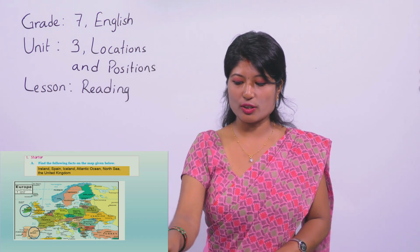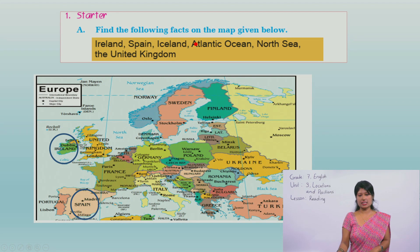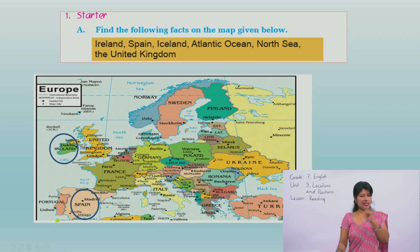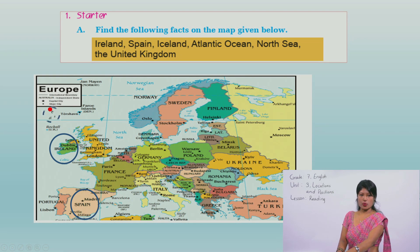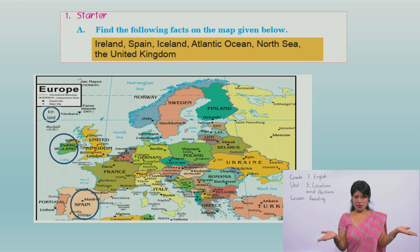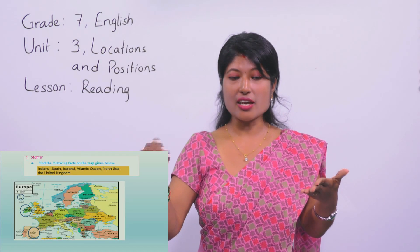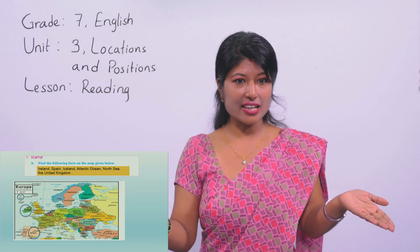Now the next fact we have to find is Iceland. Can you see Iceland in this map? There is a little bit of a twist. We don't see it labeled here - it is not mentioned. But somehow the point of Iceland is somewhere here. So somewhere here we can find Iceland on the map. Let's point out this point and write down Iceland - I-C-E-L-A-N-D.